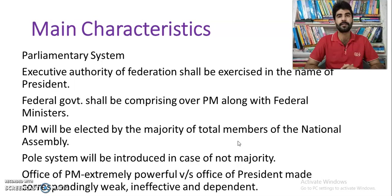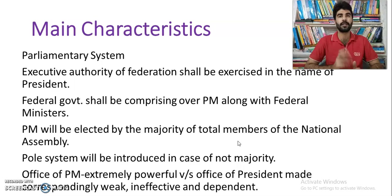The office of prime minister is extremely powerful versus the office of president, which is correspondingly weak, ineffective and dependent. The prime minister's advice should be followed by the president. When the constitution was created in 1973, there was Article 58-2-B, which was later abolished in 2010. Article 58-2-B had given the president the authority to dissolve the National Assembly.